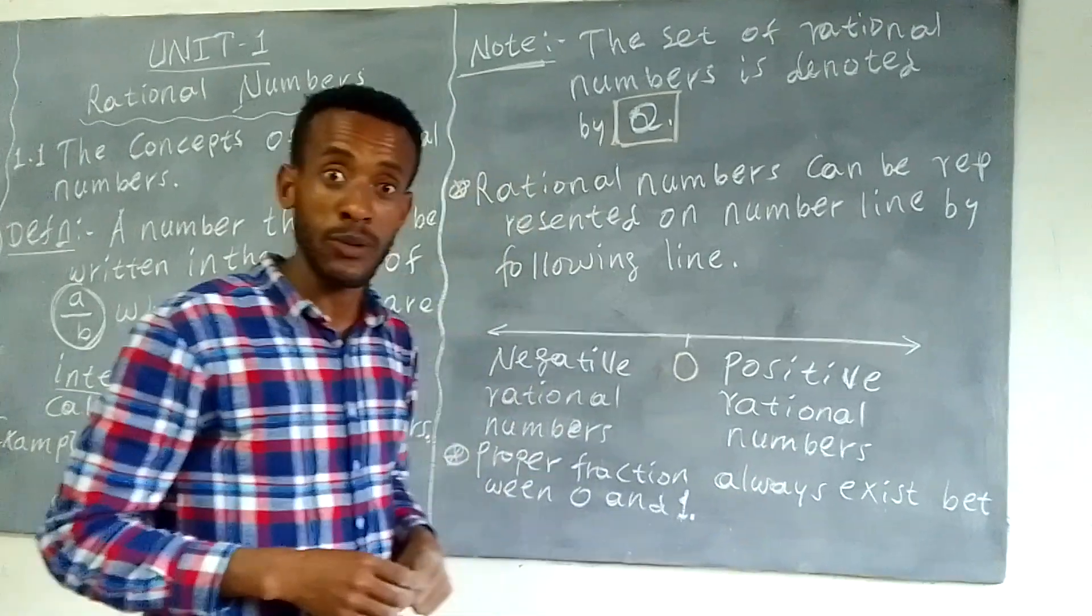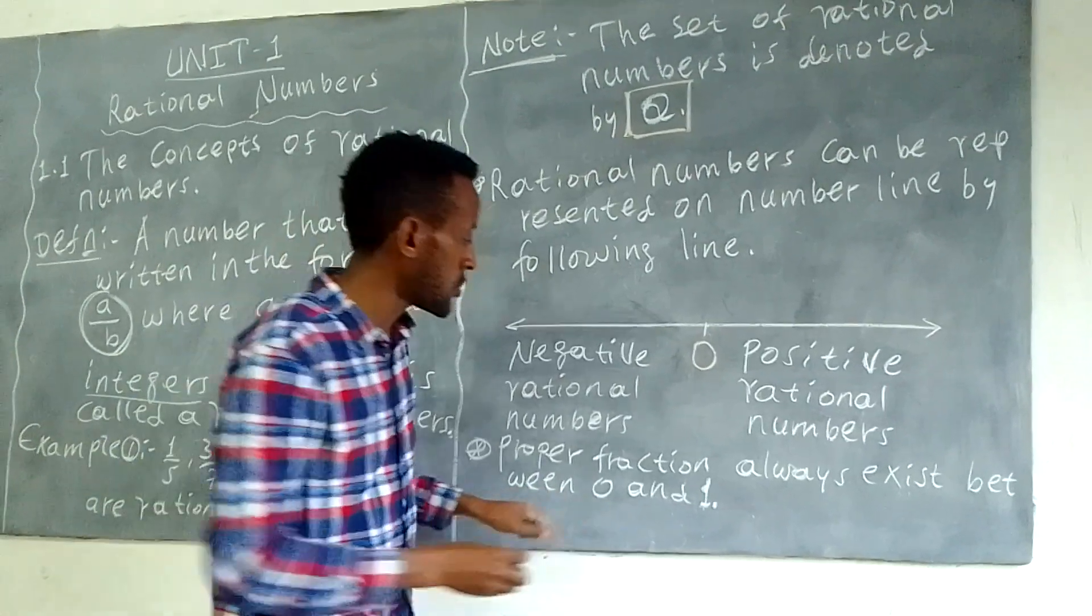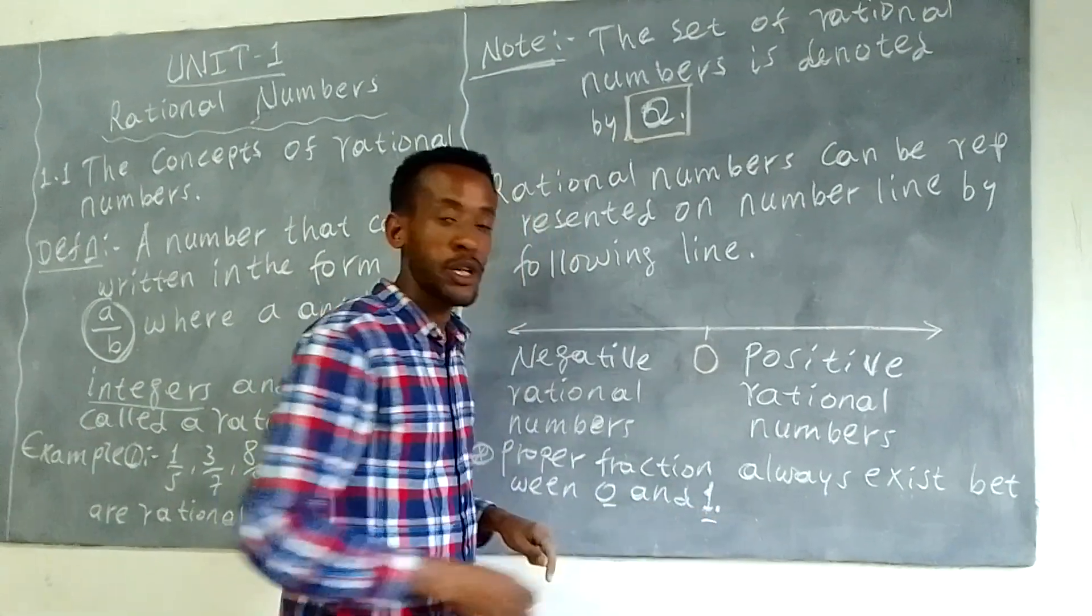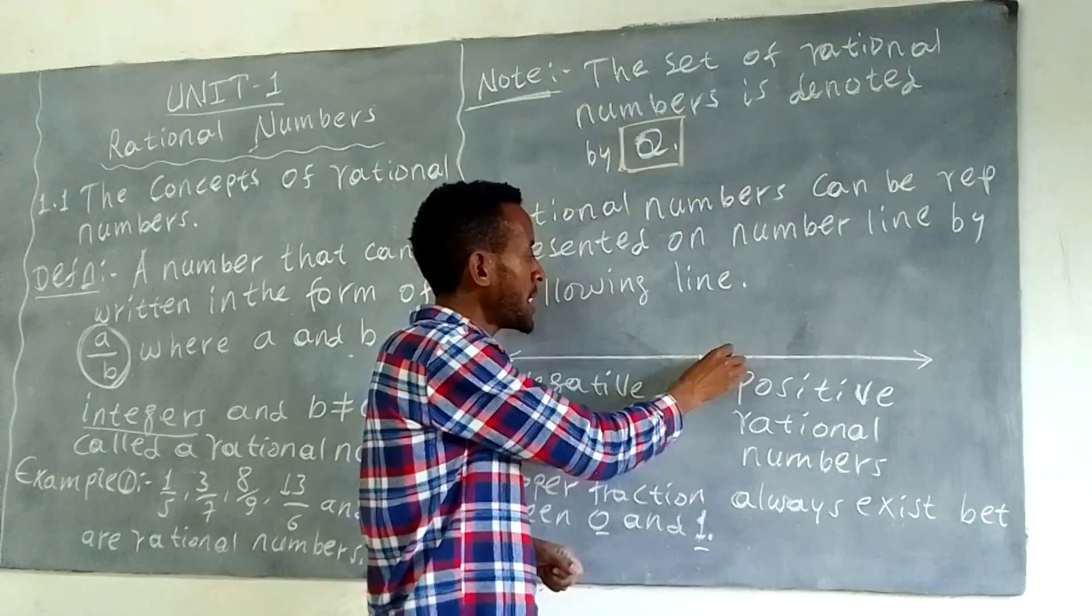Proper fractions always exist between 0 and 1.